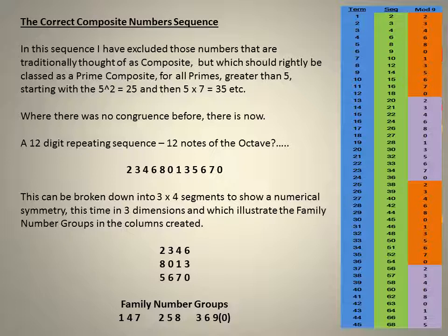2, 3, 4, 5, 6, 7, 0. This can be broken down to show a numerical symmetry, this time in three dimensions, and which illustrate the family number groups in the columns created.